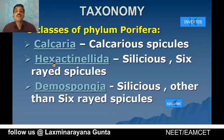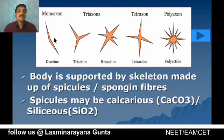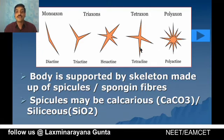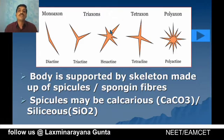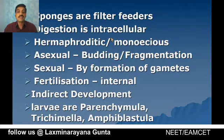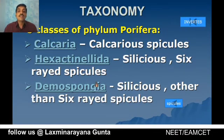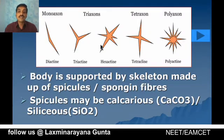Hexactinellida includes sponges with siliceous spicules that are six-rayed — called hexactin spicules. Demospongia also includes siliceous spicules, but other than six-rayed — meaning there may be tri-actin, tetra-actin spicules, etc. The spicule types include di-actin (two rays), tri-actin (three rays), hexactin (six rays), tetra-actin, and poly-actin spicules.